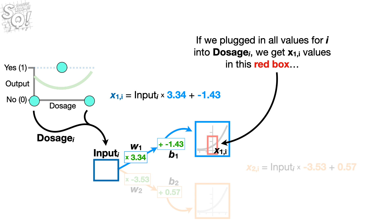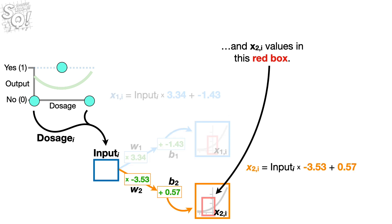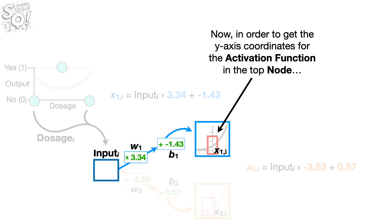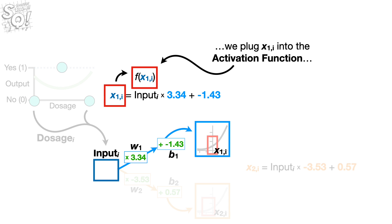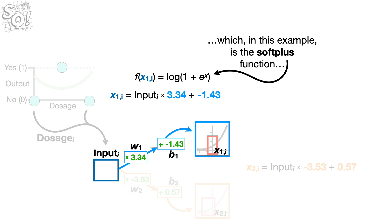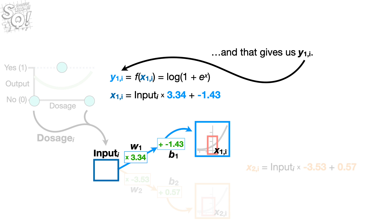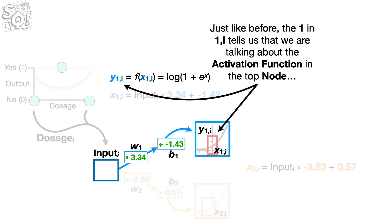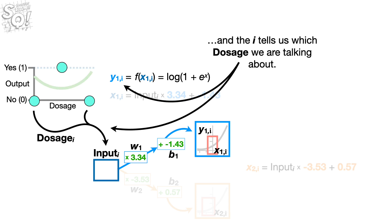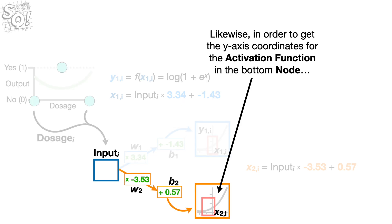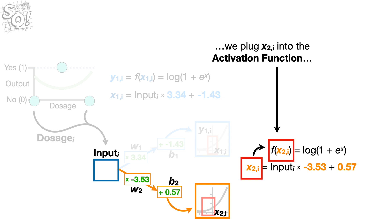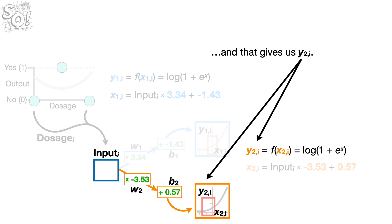If we plug all values of i into dosage sub i, we get x sub 1,i values and x sub 2,i values. To get the y-axis coordinates for the activation function in the top node, we plug x sub 1,i into the activation function — in this example, the softplus function — and that gives us y sub 1,i, where the 1 refers to the top node and i indicates which dosage. Likewise, plugging x sub 2,i into the activation function gives us y sub 2,i for the bottom node.